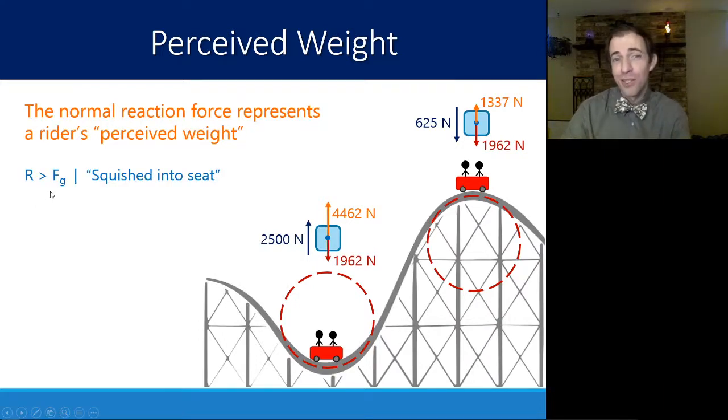So this normal reaction force is representing the perceived weight. If R is larger than FG, so if how much the chair is pushing on you is greater than it typically would because it's greater than your force of gravity, you're going to feel like you're squished into your seat. You're going to feel heavier. This is what we call pulling Gs, that the magnitude difference. So here it looks like I'm more than double the force of gravity, which means I'm pulling like two Gs on this roller coaster. I'm experiencing more than twice the force of gravity in this case.